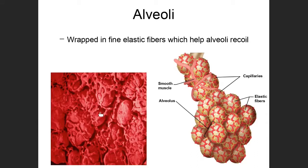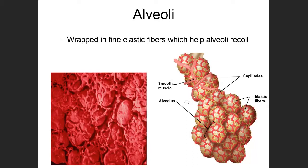Before we get into surfactant, I want to spend a little more time talking about the alveoli and some of their features. Looking at this picture of actual alveoli under a microscope, you can see how tiny and delicate they are, and you'll notice a net-like mesh covering them — that's the blood vessels, which allows them to exchange gases with the blood. You've also got a yellow mesh covering these alveoli in the artist's representation; these are elastic fibers made up of a protein known as elastin, which is really stretchy.